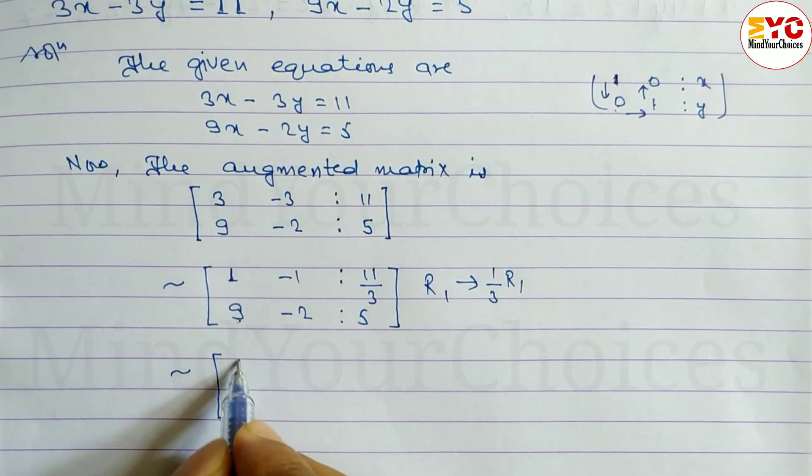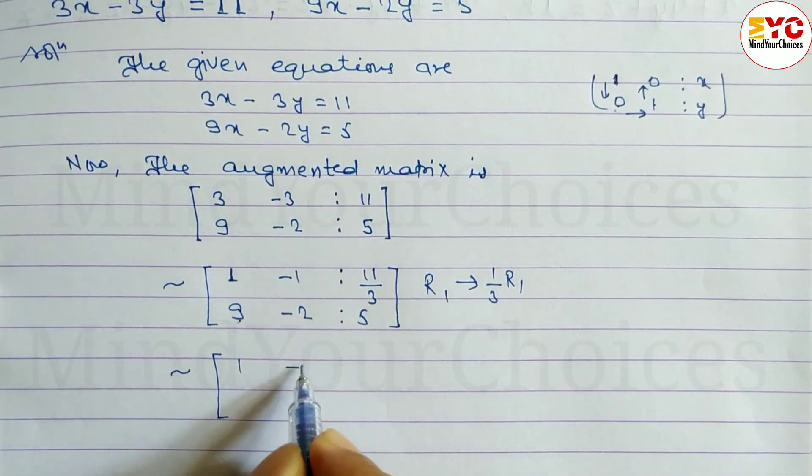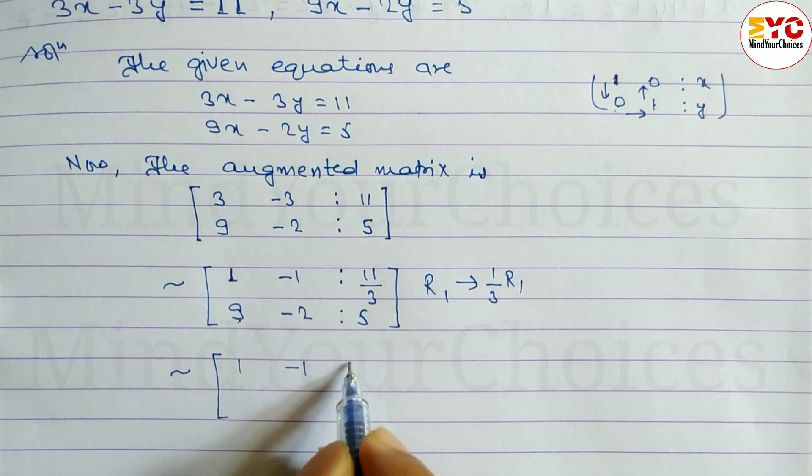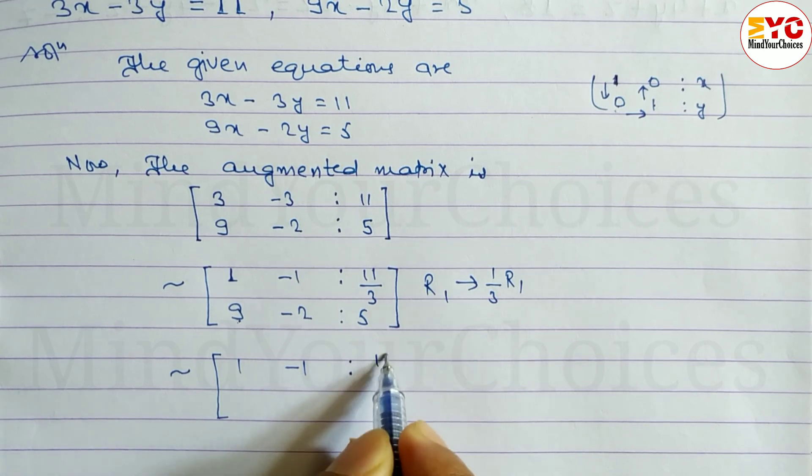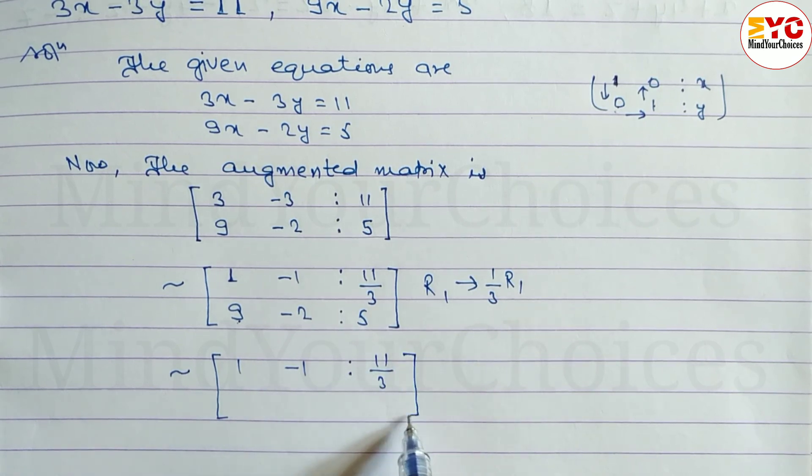So R1 is now: 1, minus 1, and 11 divided by 3.